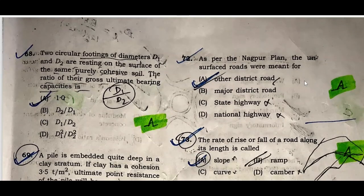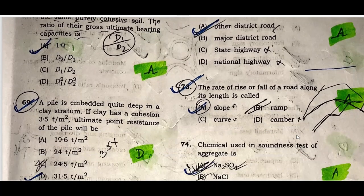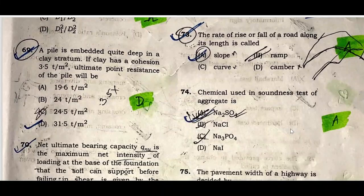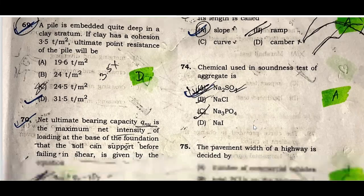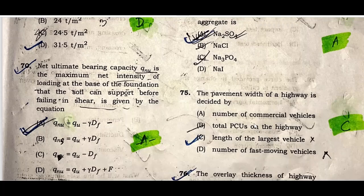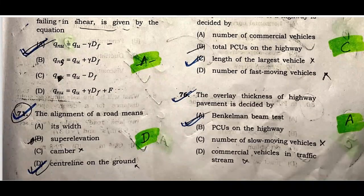Question seventy-four: As per the Nagpur plan, the surface roads were meant for other district roads. Option A is correct. The rate of rise and fall of the road along its length is known as gradient. Option A is correct. The chemical used for the soundness test of aggregate is Na₂SO₄. Question seventy-five: The pavement width of a highway is decided by the length of the largest vehicle. The overlay thickness of a highway pavement is decided by the Benkelman beam test. Option A is correct.